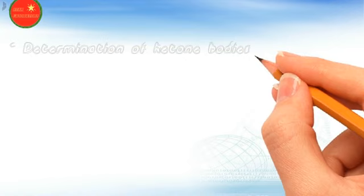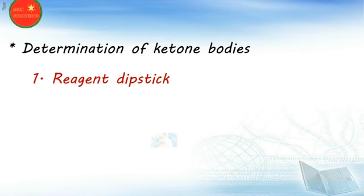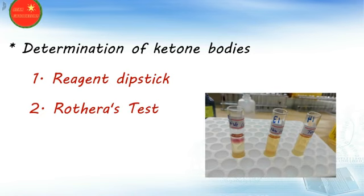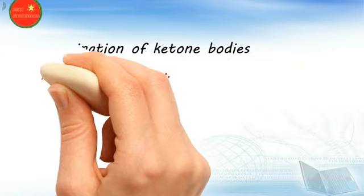For determination of ketone bodies in the laboratory, we can use: the reagent dipstick technique, which is a very simple, rapid, and convenient method; the Rothera's test, a simple test performable in ordinary laboratory setups; the Gerhardt test; and the test for beta-hydroxybutyric acid. Now let's discuss the Rothera's test for urine ketone bodies.